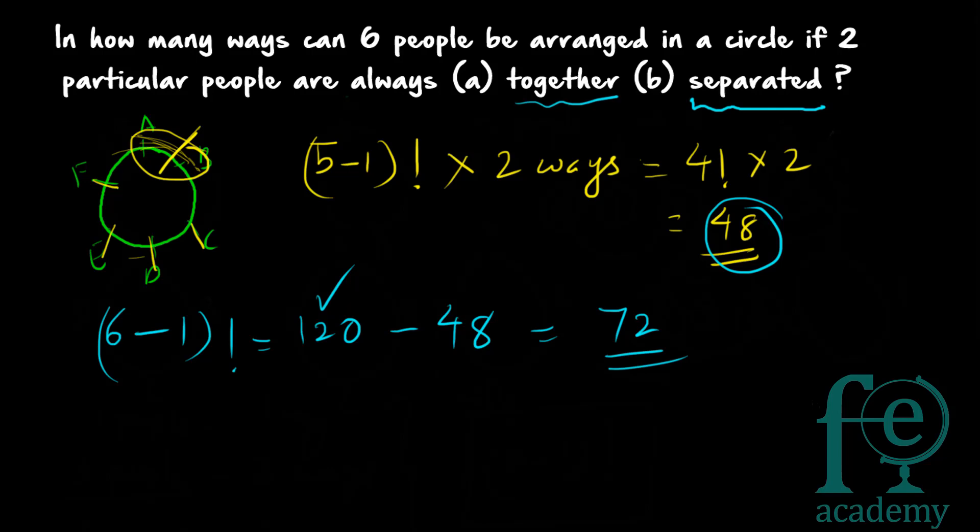So this is all about arrangement in a circle. Just remember: you can arrange n people in a circle in (n−1)! ways. Thank you for watching.